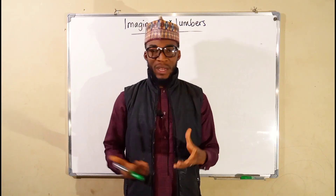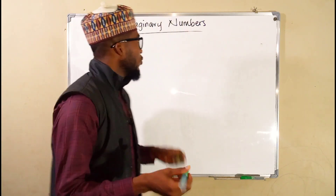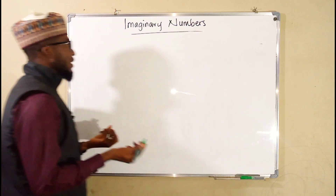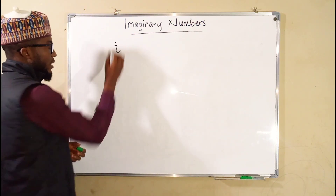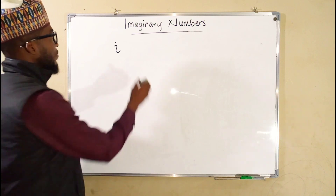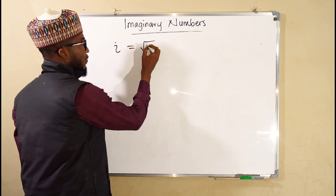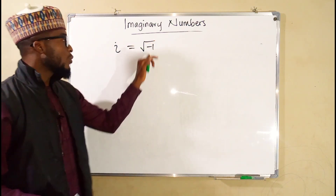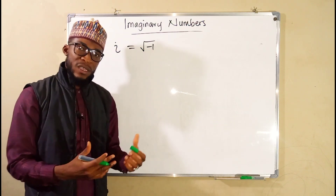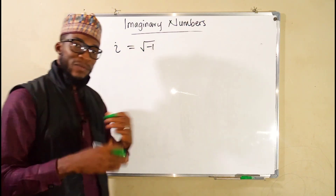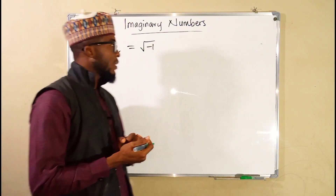We have started an introduction about imaginary numbers. Mathematically, an imaginary number is denoted by i, and it is equal to the square root of negative 1. Since negative 1 is a real number, the square root of any negative real number will give rise to an imaginary number.